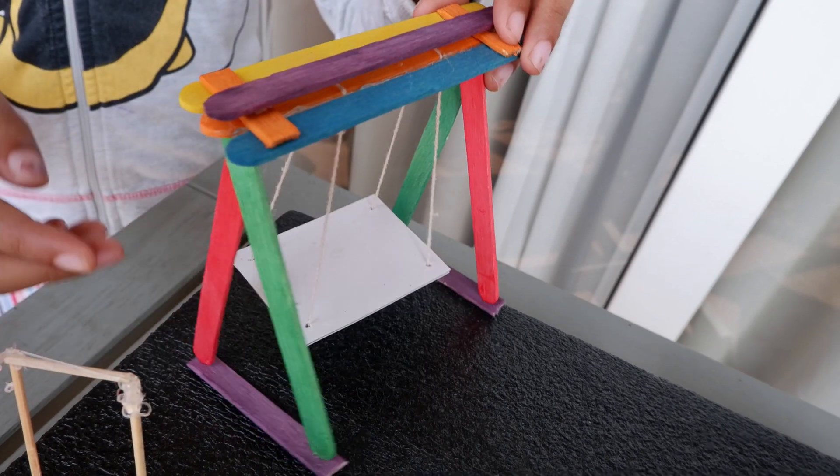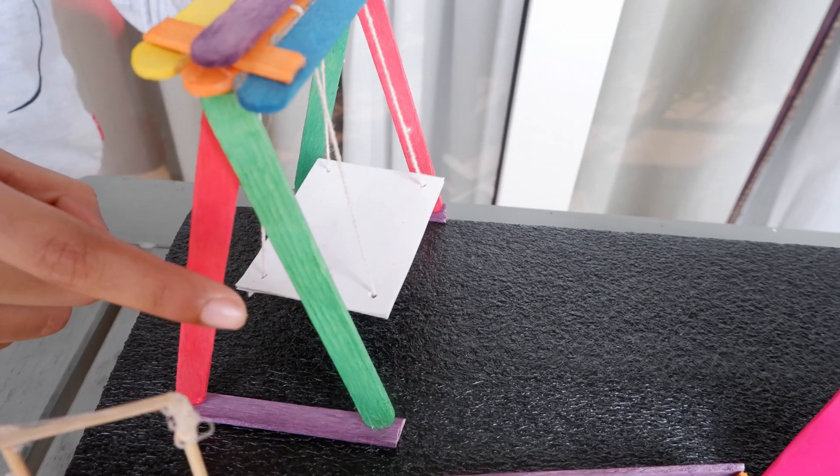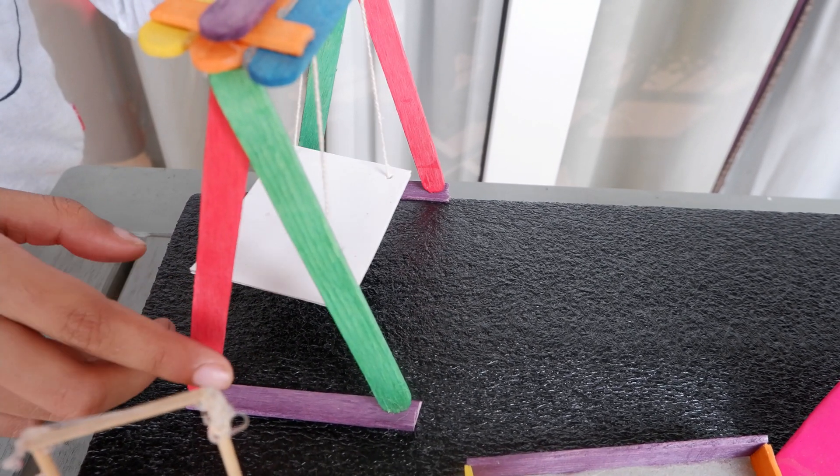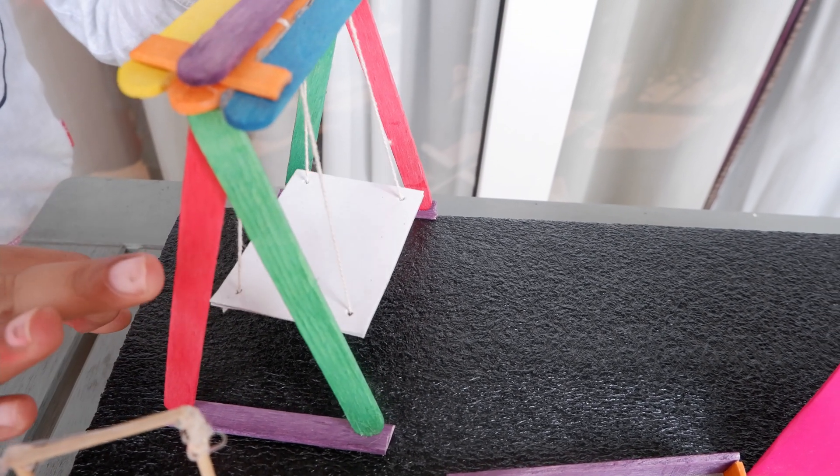The side of the swing is shaped like a triangle. A triangle has three sides and three corners.